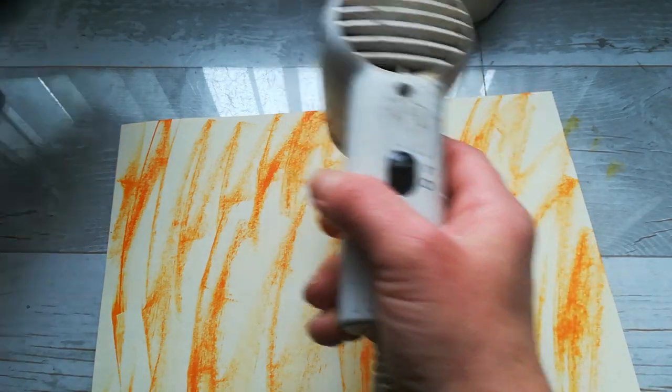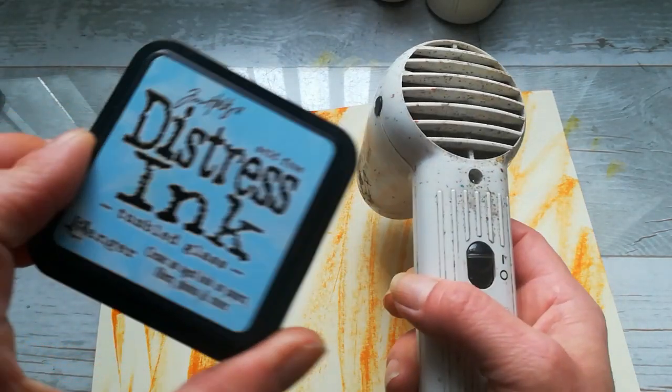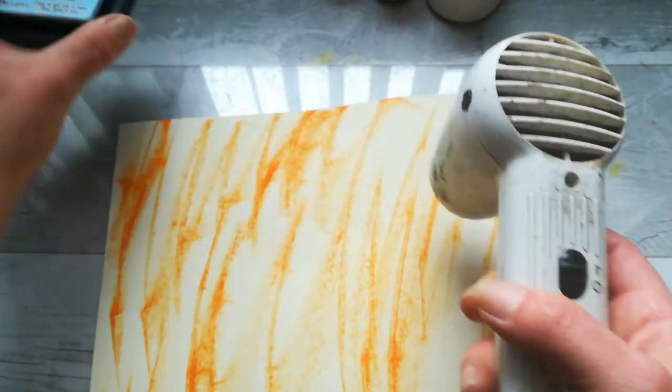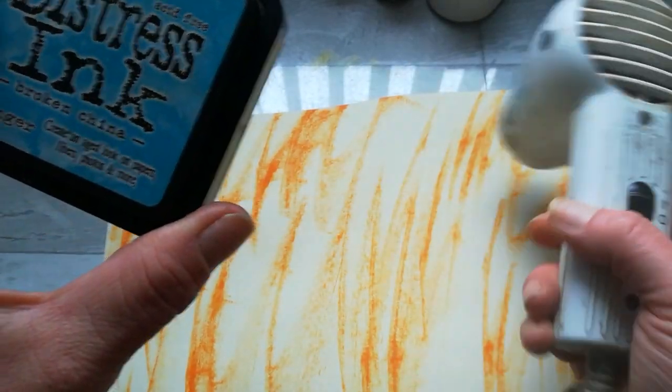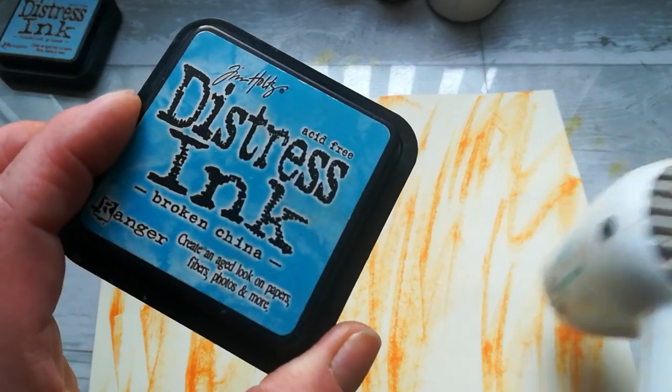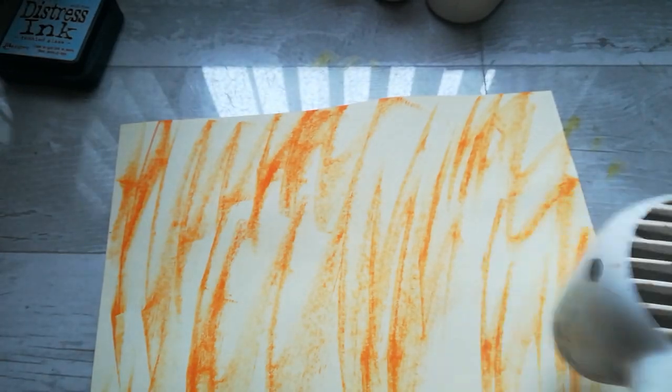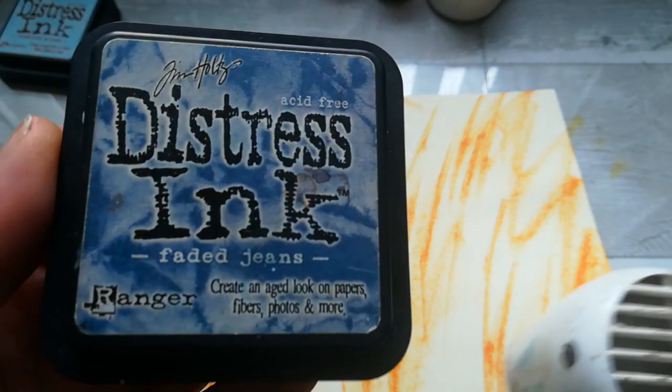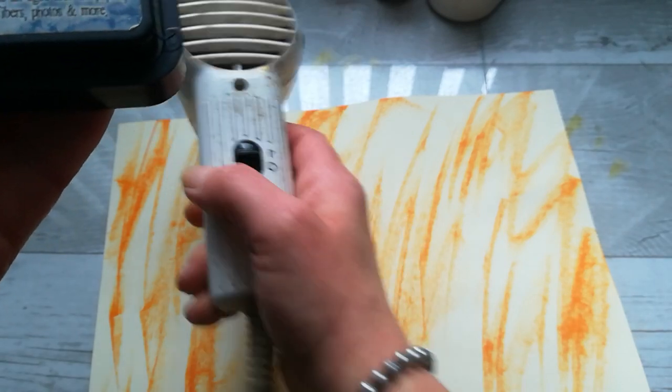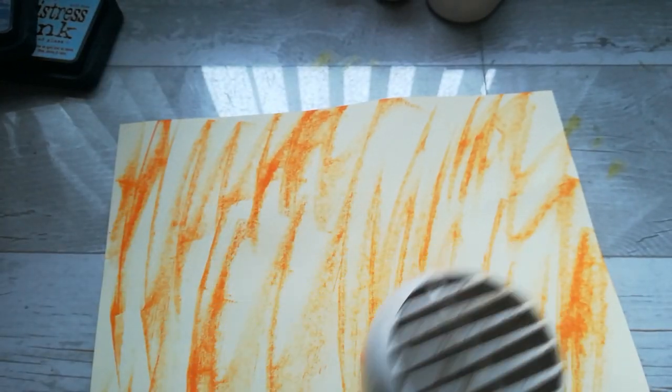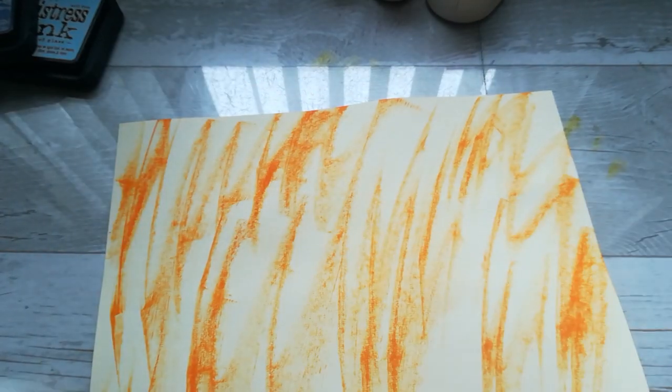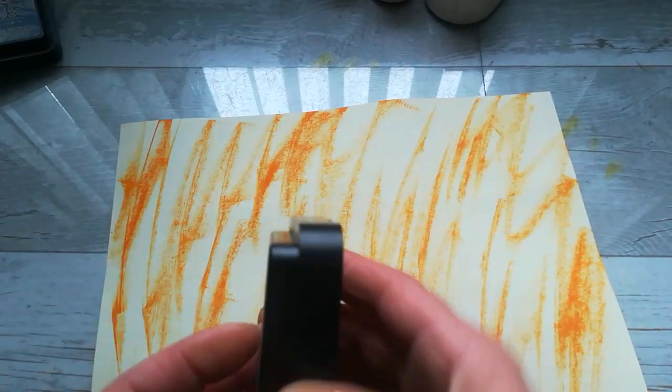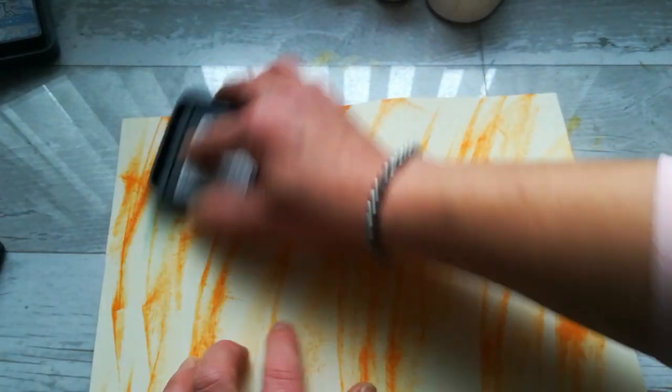And then I will use my blue colors. For that I choose Tumbled Glass, Broken China, and also a little bit darker, those Faded Jeans. I think this will be enough.